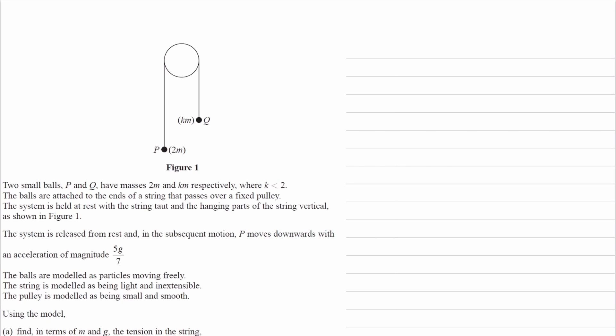So we have two small balls, P and Q. We're given the masses 2m and m. So then the mass, or the weight, of the 2m would be 2mg. I'll just draw that on. And then for Q, that would be kmg. And then we're told that k is less than 2, so therefore this is the heavier mass. The whole thing will go around in this direction then.